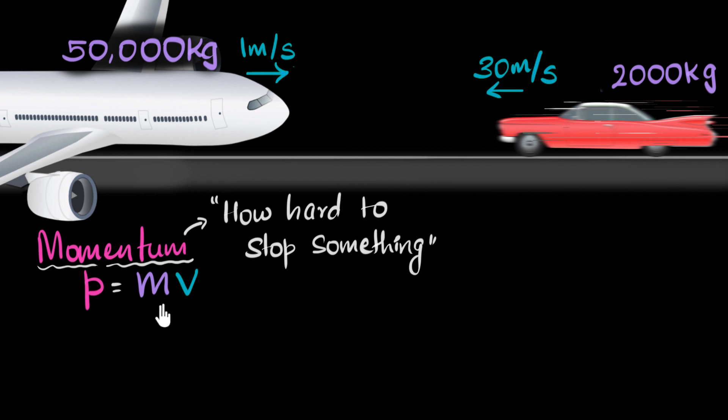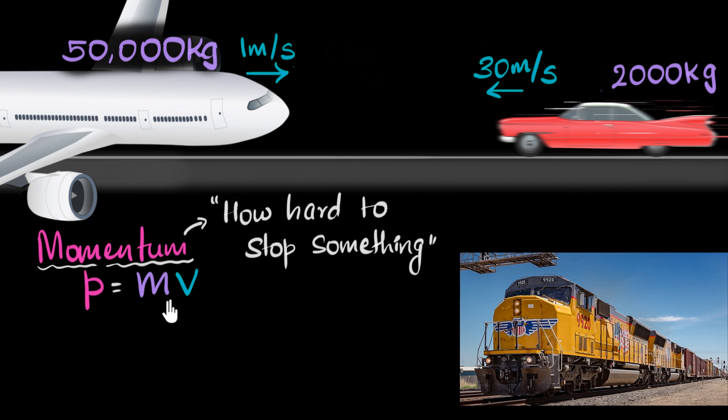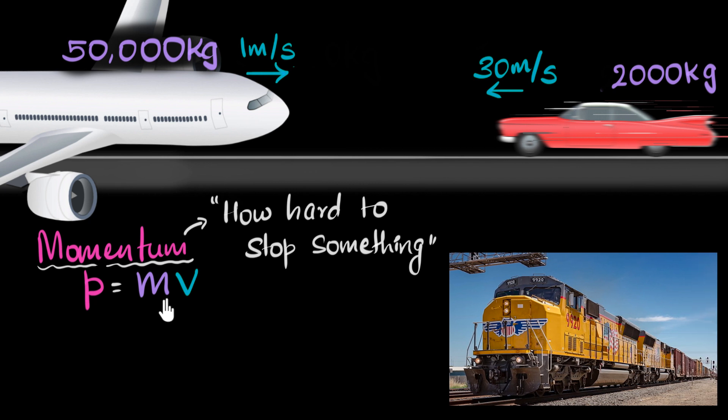On the other hand, imagine something which has both very high mass and high velocity. Now, it has super high momentum. Does that make sense? Well, yeah. I mean, imagine a freight train, which is very heavy. And let's say it's going at 100 kilometers per hour. Ooh. Can you imagine trying to stop that? That is gonna be super hard to stop. So, it makes sense to say it has very, very high momentum, right?